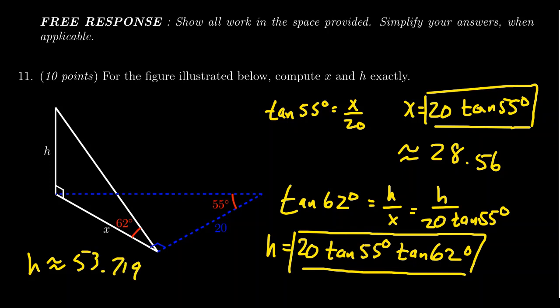You do not need the approximation for full credit — the exact answer earns full credit. An approximate answer is worth partial credit only if the exact answer is not included or is incorrect, but the approximation is still correct.